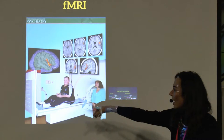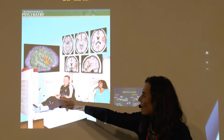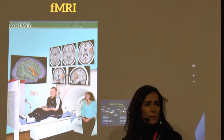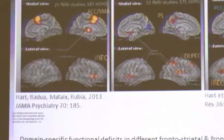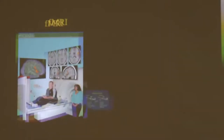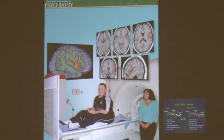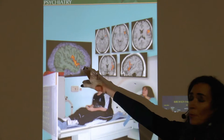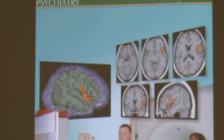In fMRI, the child lies in an MRI scanner with their head under a coil, sees a computer task via a mirror, and responds with a button press. In this example, the child did a task where they had to inhibit a motor response. We then look at the areas which are activated when they do the task. Areas which are activated get more oxygenated blood because they need more oxygen and glucose, giving a better magnetic signal — visible as orange blobs on the image. We compare control children with ADHD children to see which areas are not activated as much during attention or inhibition tasks.